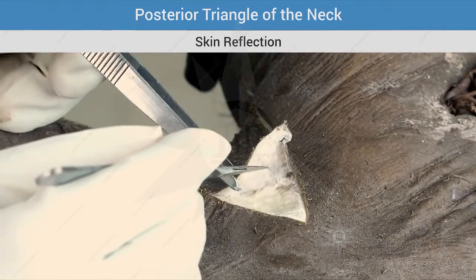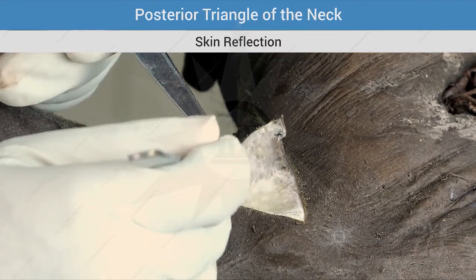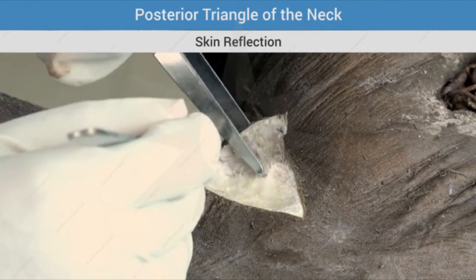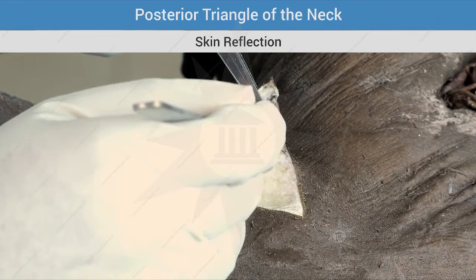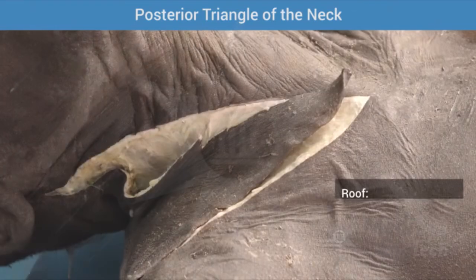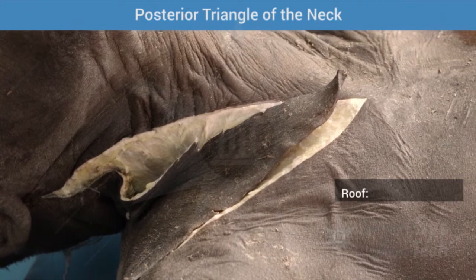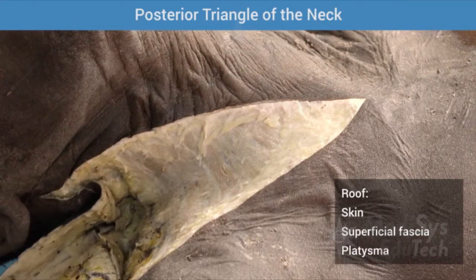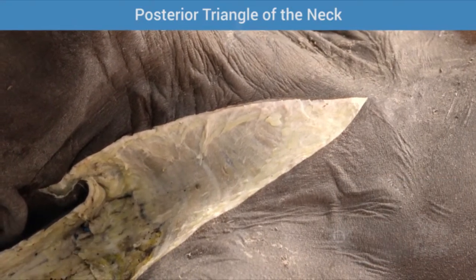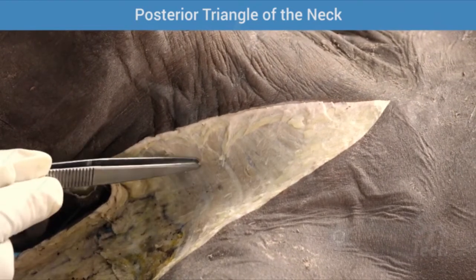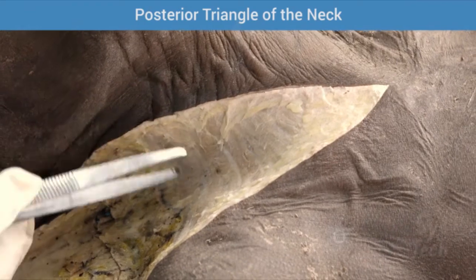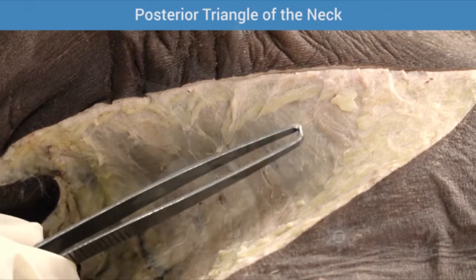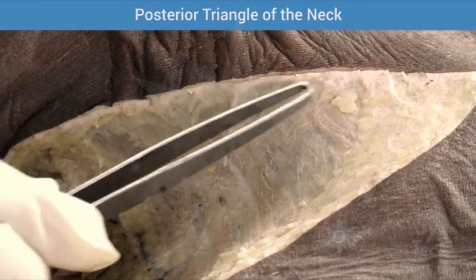Let's begin with reflection of the skin. Separate the superficial fascia from the skin without damaging the subcutaneous nerves, vessels and fibers of platysma which lie immediately deep to the skin. The roof of the posterior triangle is formed by skin, superficial fascia and platysma. After reflecting the skin, we can see the superficial fascia and the fasciculi of platysma — this is the lower part of platysma which is seen forming the roof of the posterior triangle.